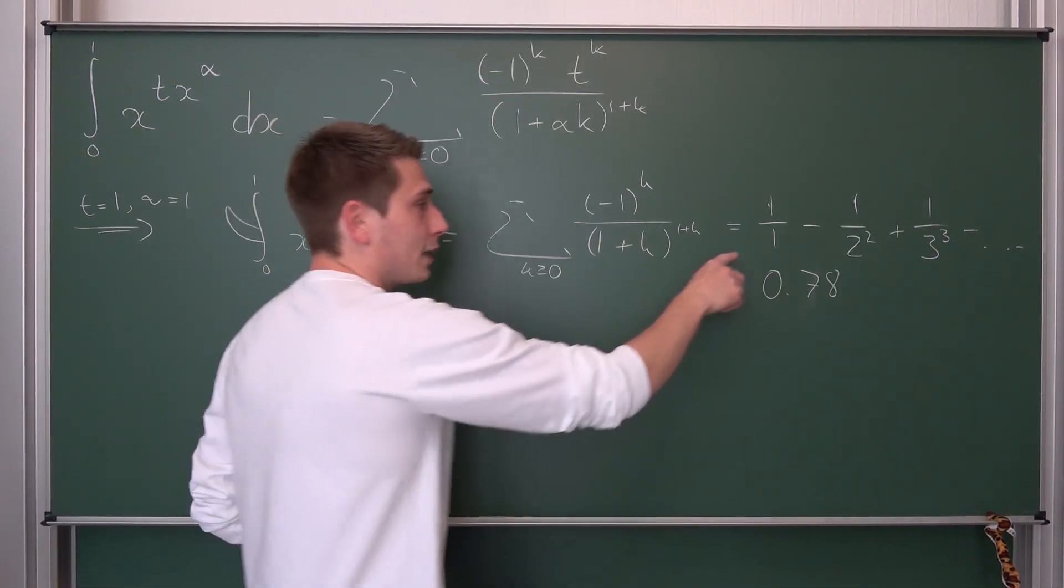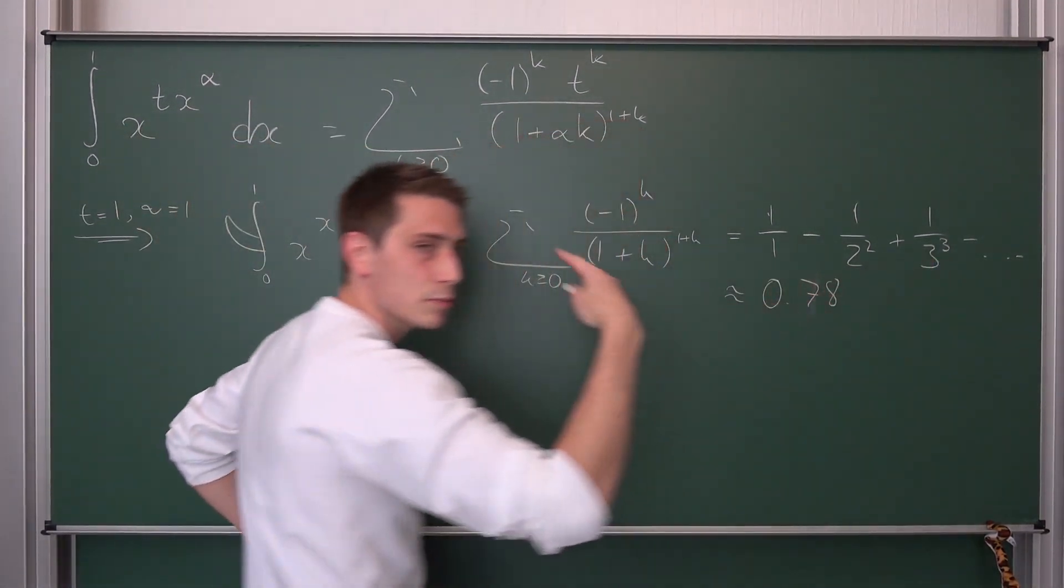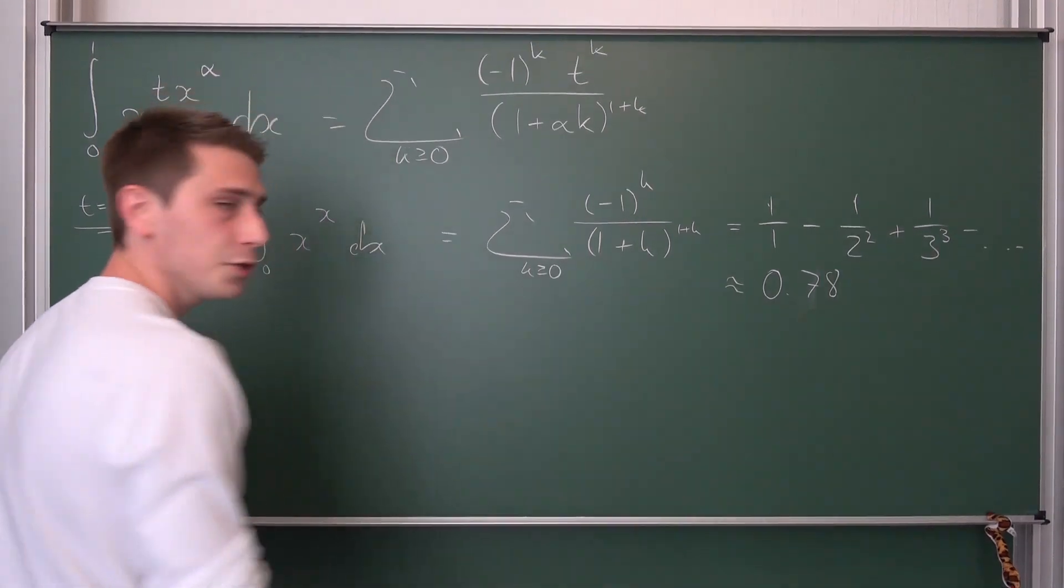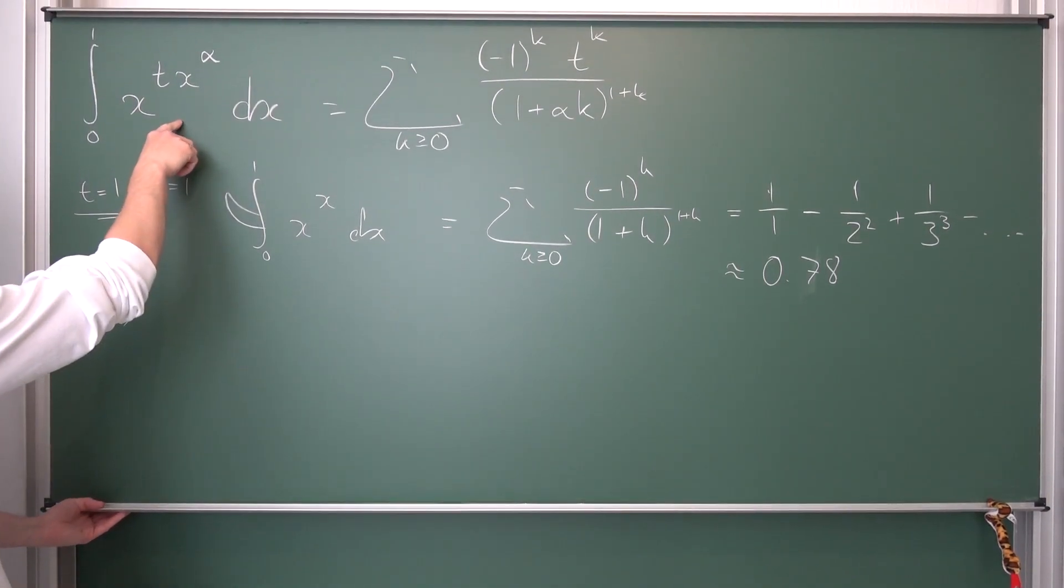Like I said, you can truncate it pretty early and you are going to be really close to the real result already. This is why I could remember those results a little bit. That's really cool. I mean, it kind of looks like the Basel problem in some way, just with the exponent rising by 1 all the time. That's a really curious thing right here. Next up.